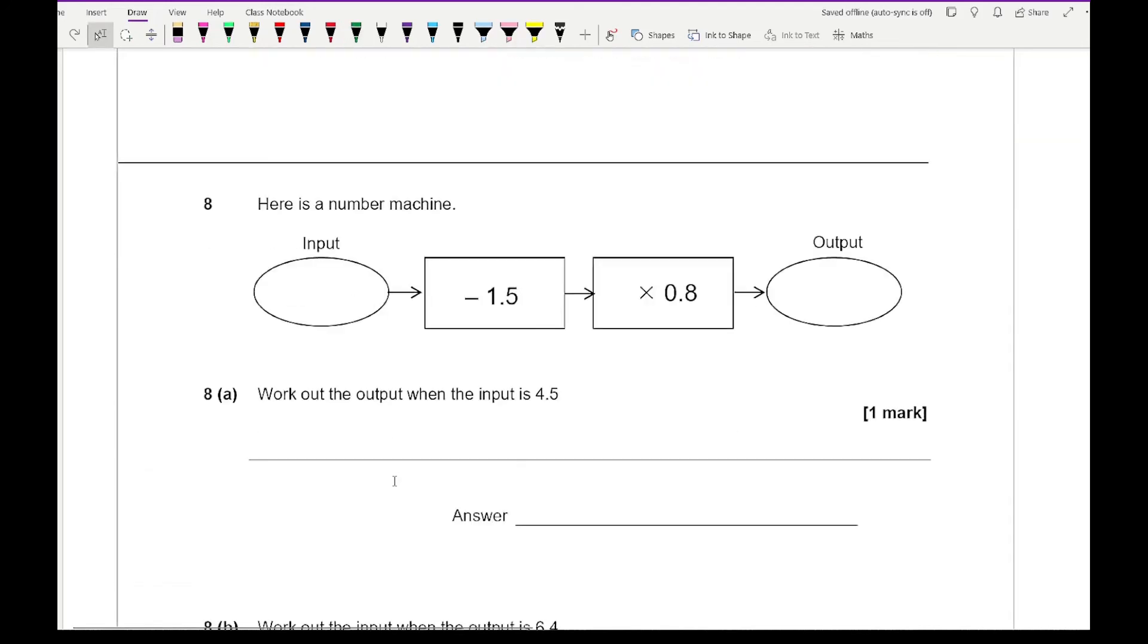Moving on to question 8, here's a number machine. Work out the output when the input is 4.5. So we've got 4.5, I need to do 4.5 minus 1.5, which gives me 3, then do 3 times 0.8, which gives an answer of 2.4.